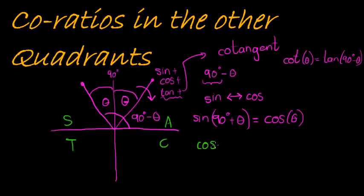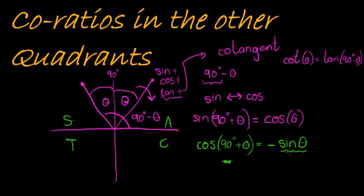When we take cos of 90 degrees plus theta, we notice that cos in the second quadrant is negative. So I can change this to sine of theta, but sine of theta gives a positive value. Since cos of 90 plus theta must be negative, we have to multiply by a negative. Many students get confused because sine is positive in the second quadrant — but we are calculating cos of 90 plus theta, which must be negative, so we multiply with a negative.